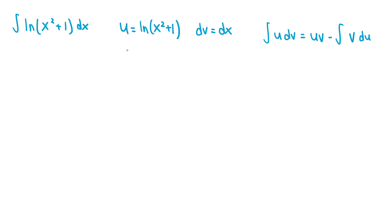If we differentiate u, we get du equals 2x over (x² + 1) dx. Because if you apply the chain rule, the derivative of ln(x² + 1) is just 1 over (x² + 1), using the rule that the derivative of ln(x) equals 1 over x, and then we multiply by the derivative of x² + 1, which is 2x. So the entire derivative is 2x over (x² + 1) dx. The integral of dx is x, so v is equal to x.